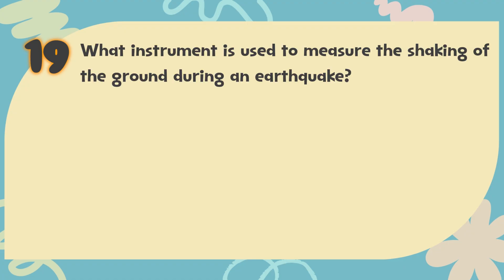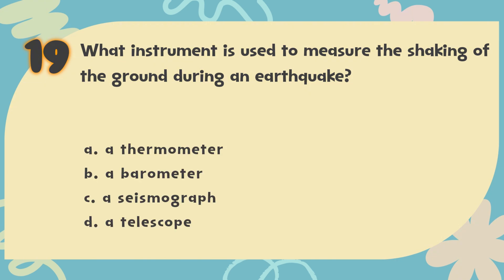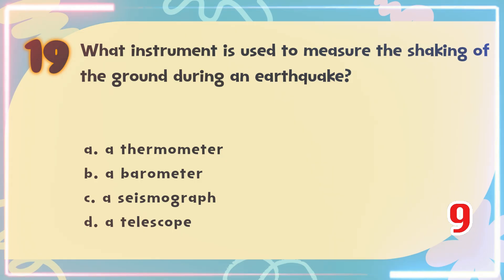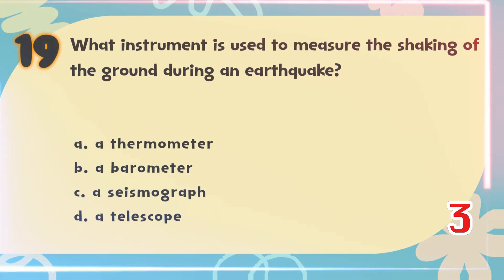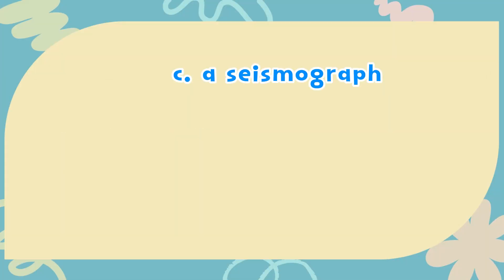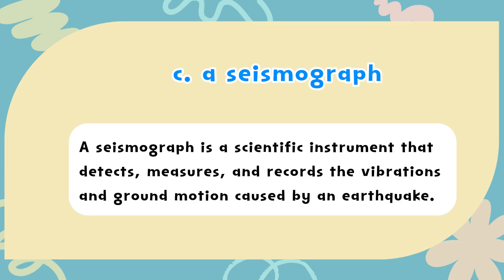Number 19. What instrument is used to measure the shaking of the ground during an earthquake? The choices are: A. A thermometer, B. A barometer, C. A seismograph, D. A telescope. The correct answer is C. A seismograph. A seismograph is a scientific instrument that detects, measures, and records the vibrations and ground motion caused by an earthquake.